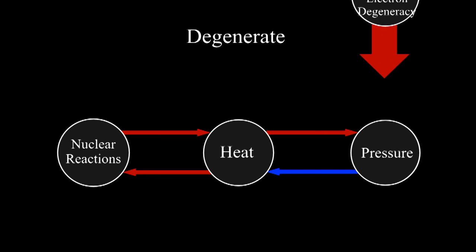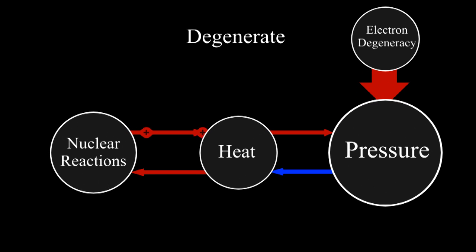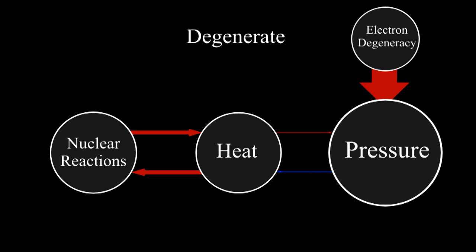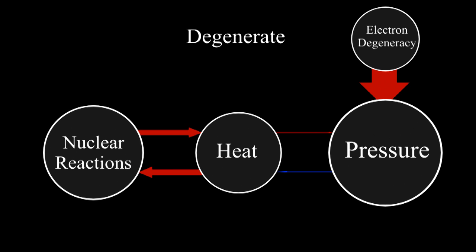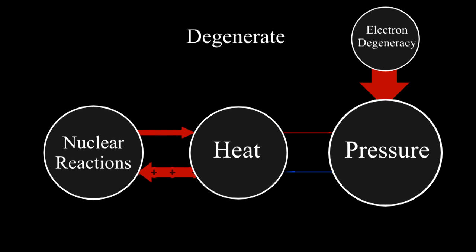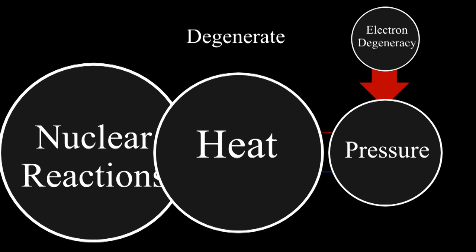It's electron degeneracy. When you raise the temperature, the pressure barely changes. The core does not expand, and it does not cool. It remains at the higher temperature. At this temperature, helium can burn even faster, which leads to even higher temperature. The temperature and the nuclear reactions feed off each other. The result is an explosion.